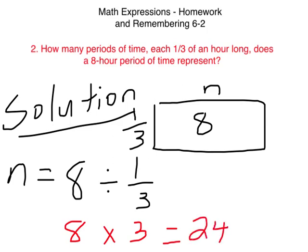So there are 24 periods. So this is using our box, our area model to represent a solution equation here, and then our answer. So when you write your answer,